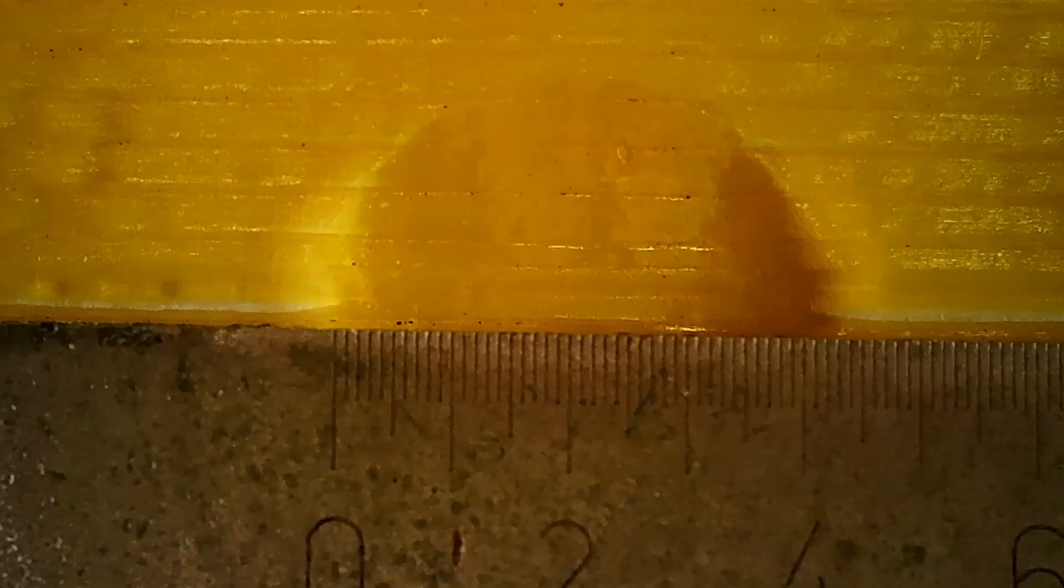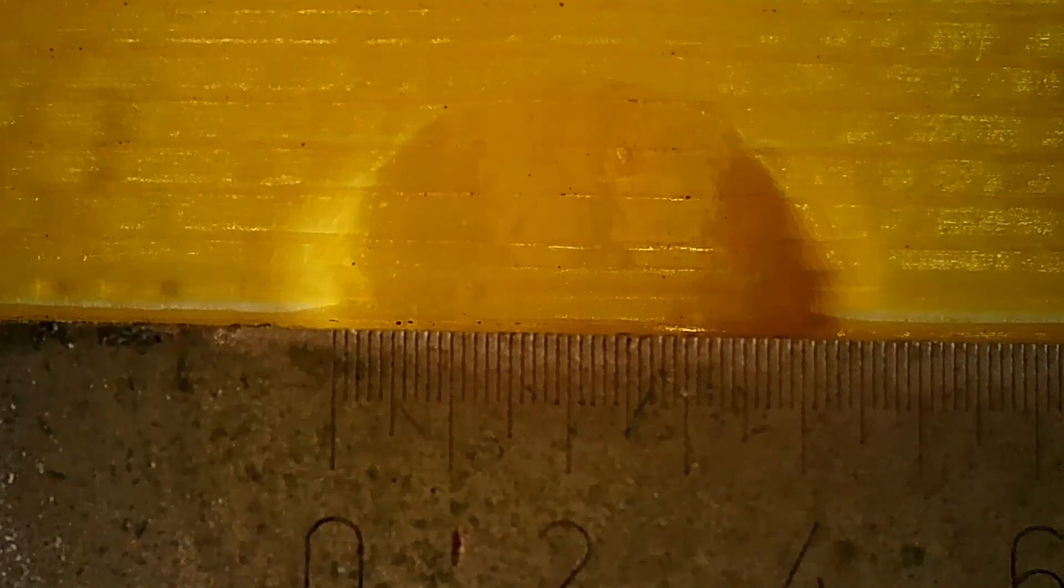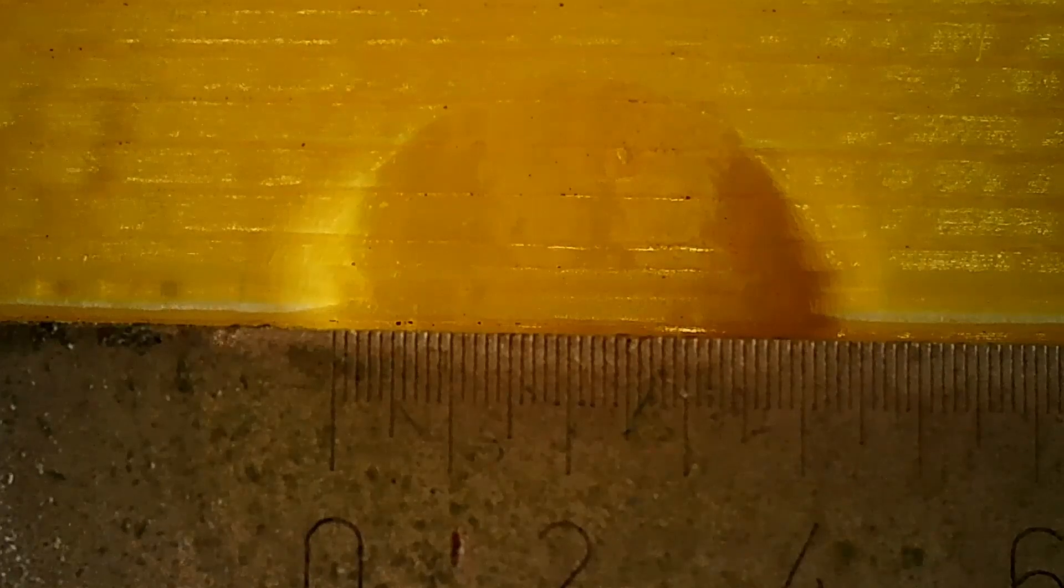So there is the hole and this is the ruler with the 0.1 millimeter divisions and as you can see this hole is approximately 4.2 millimeters in diameter. Let's check the other hole, this gray one.